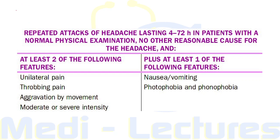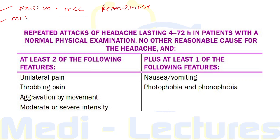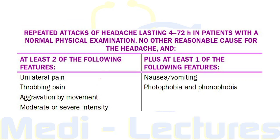Tension headache, the most common cause of primary headache, is also known as featureless headache since features associated with migraine — like nausea, photophobia, and vomiting — are not present. Migraine, on the other hand, can be considered a featureful headache. These two entities must be differentiated as they are the most common causes of primary headache.